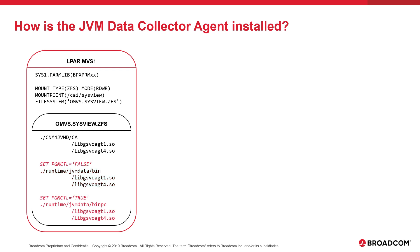Note that if the program control option is set in the inst6 job, the low-level directory structure will be runtime/jvmdata/bin_pc to indicate the shared objects in that directory have the program control attribute set. It is advisable to create both sets of directories in the event they are needed in the future.